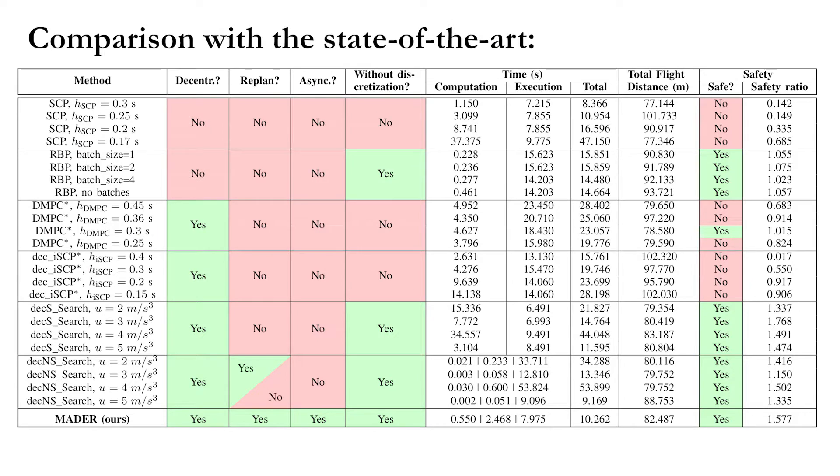This is the comparison of Mater with other algorithms. Mater is the only algorithm that has re-planning, is decentralized, and is asynchronous. We also compare the total time, flight distance, and safety. Please check out the details in the paper.